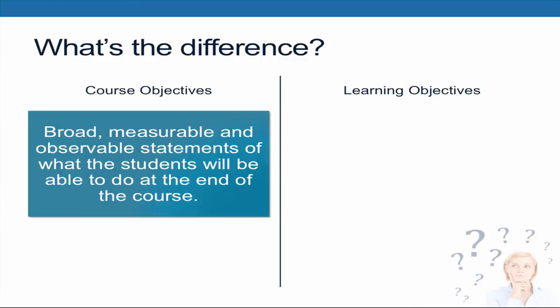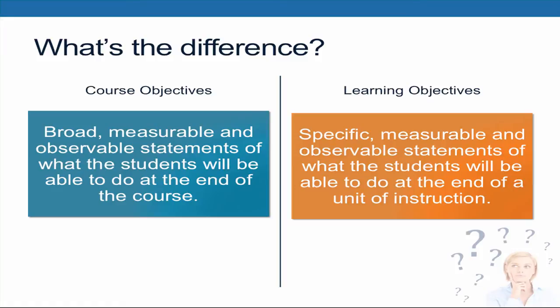Course objectives are broad, measurable, and observable statements of what students will be able to do at the end of the course. Whereas learning objectives are specific, measurable, and observable statements of what the students will be able to do at the end of a unit of instruction.